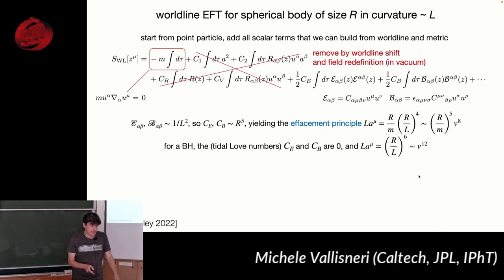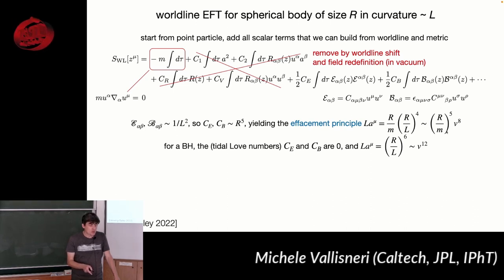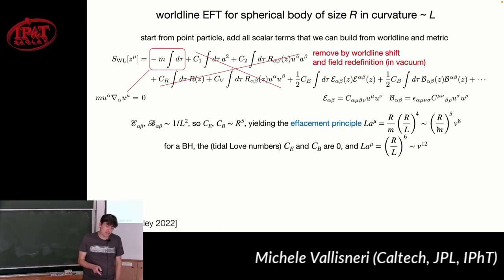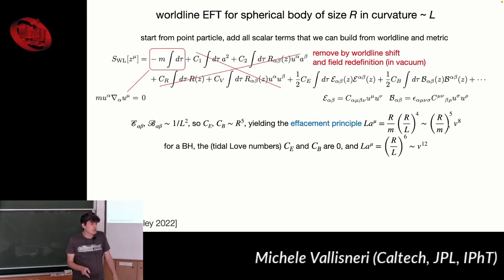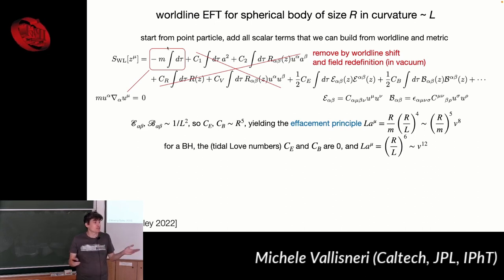For neutron stars, the tidal Love numbers don't vanish; you have a parameter given by 1 over the compactness m/R of the body. By this broad dimensional analysis, for neutron stars the tidal effect will still be small, but it will not be small for a regular star or even a white dwarf, where this coefficient can be large. So for those, you do need to worry about tidal effects. This is the field theory justification for thinking of black holes as point particles.